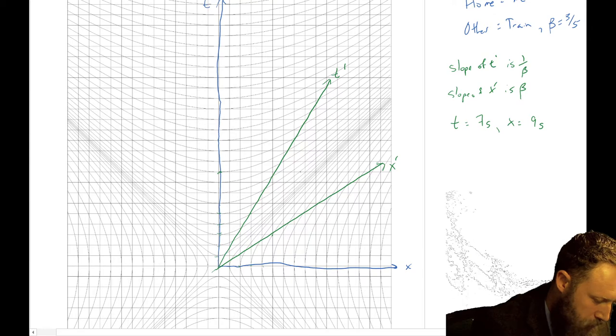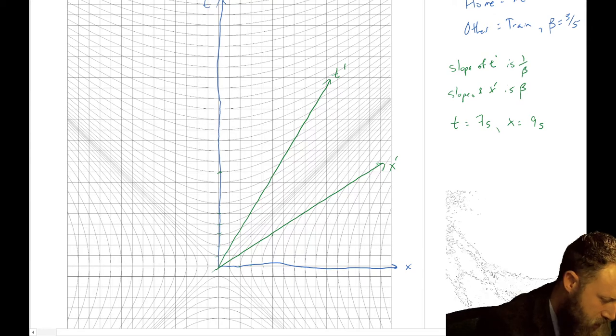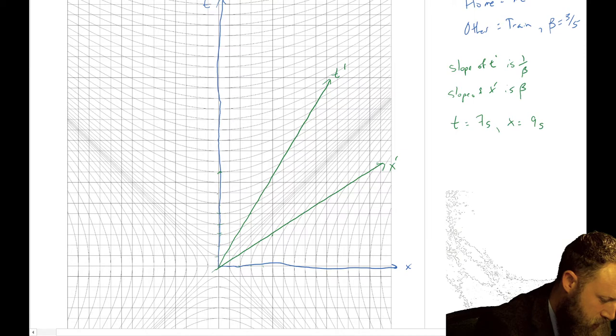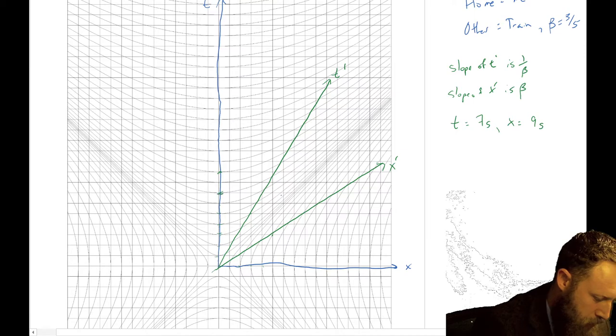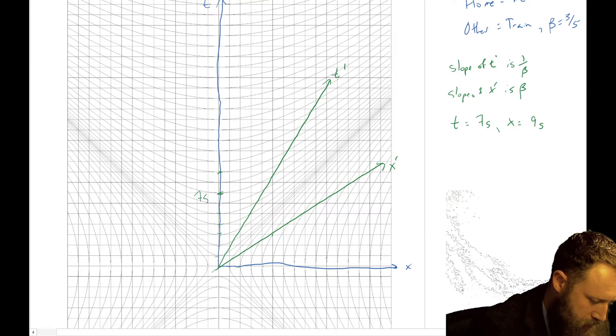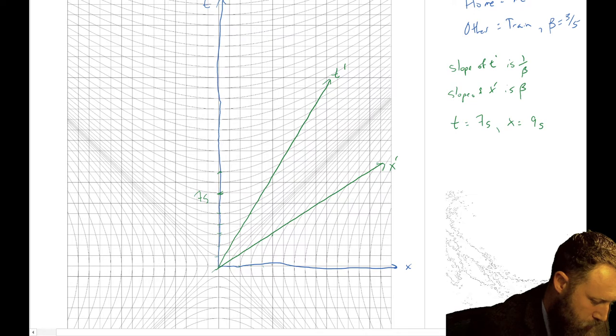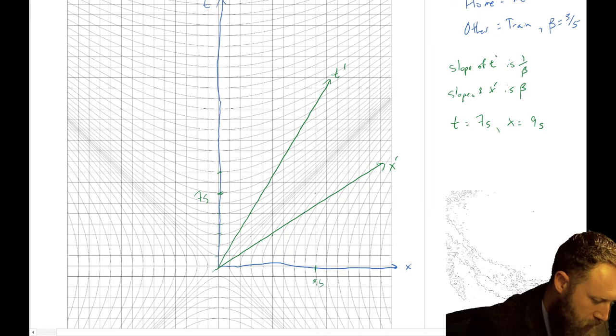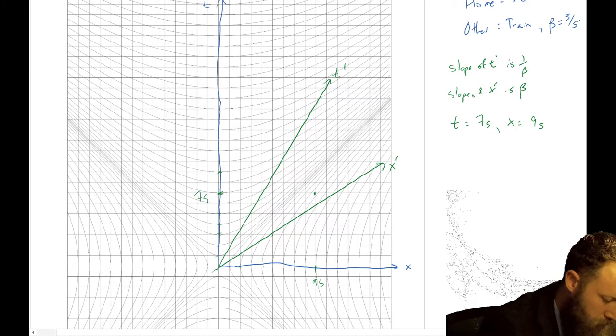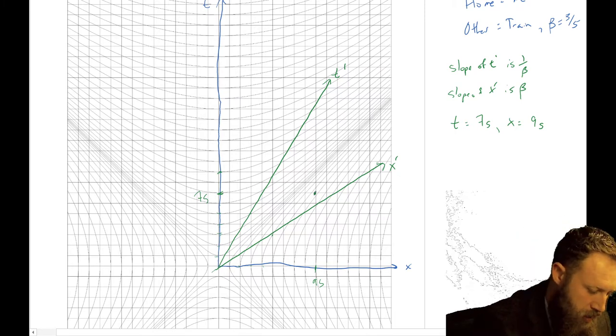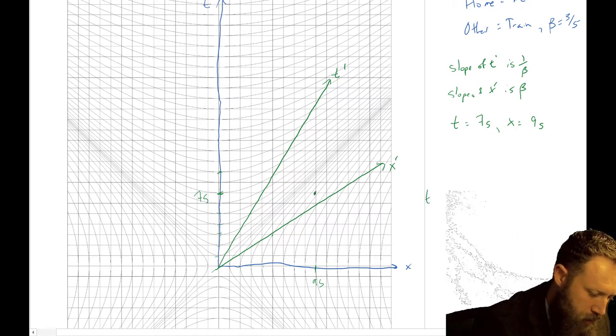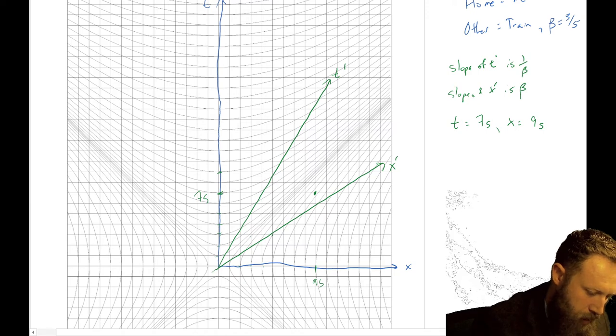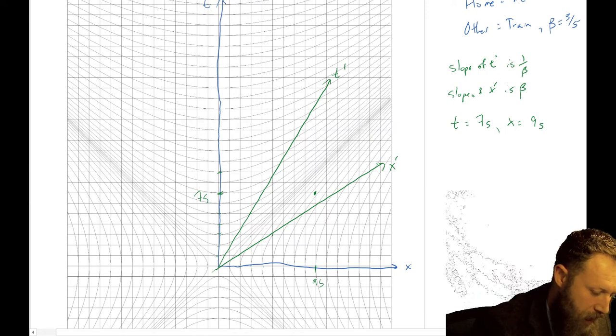And we go parallel to the x-axis until we get to... sorry, 7, I said 7. 7 parallel to the x-axis until I get to 9: 1, 2, 3, 4, 5, 6, 7, 8, 9, there's 9 seconds in the x. And then the place where those two things meet is our point: t equals 7, x equals 9.